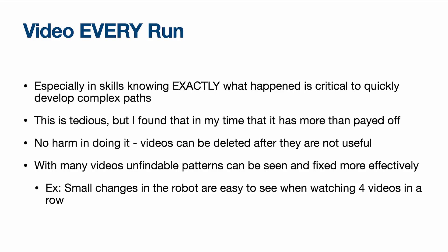Some tips and tricks I always follow: video every single run, especially in skills where it's a whole minute. You can't really remember exactly what happened in every part of the path, so having that entire video to go back and review is extraordinarily helpful. With many videos, you can find previously unfindable patterns. For example, if the robot was always off by varying amounts on a specific spot, looking at five different videos lets you see it was from zero to two inches off, so you should change it by one inch to hit the average.